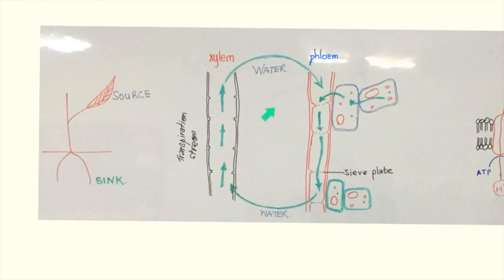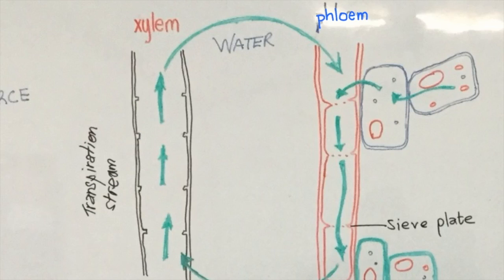The xylem and the phloem are very close by to each other, separated by a thin layer of cells known as the cambium. This diagram is very useful in understanding how sucrose moves from the source to sink. Here you can see this schematic representing the phloem with the cross walls having tiny openings, or perforations. And this is known as the sieve plate.